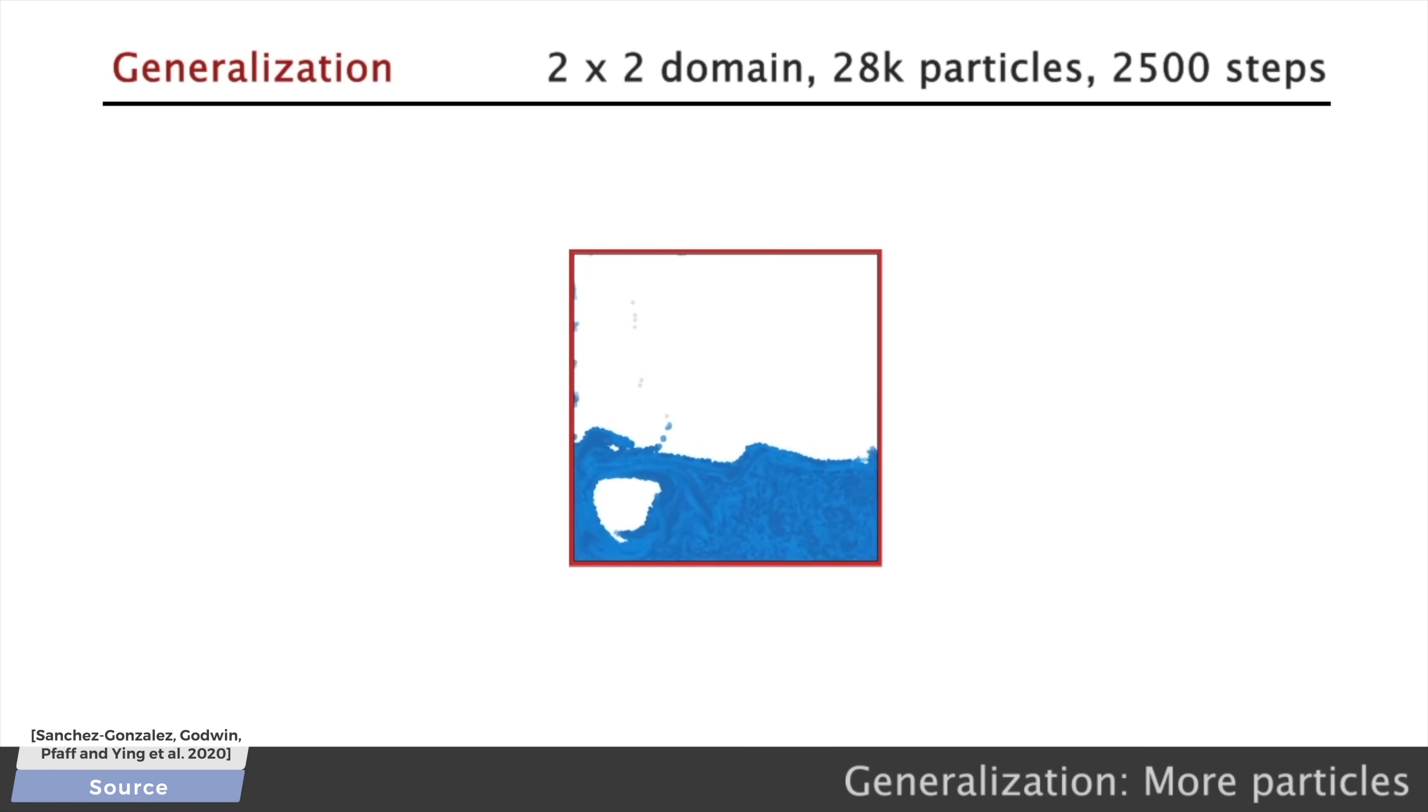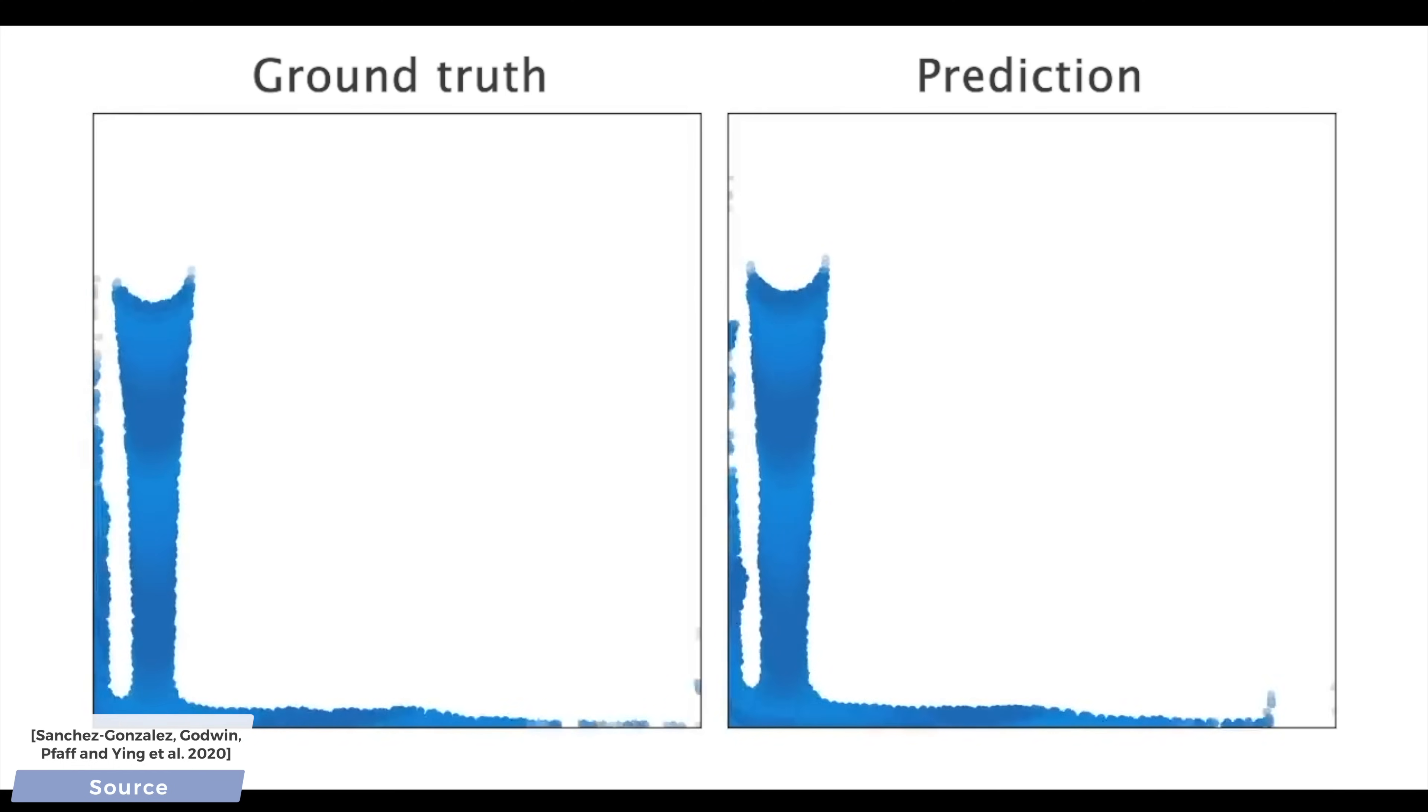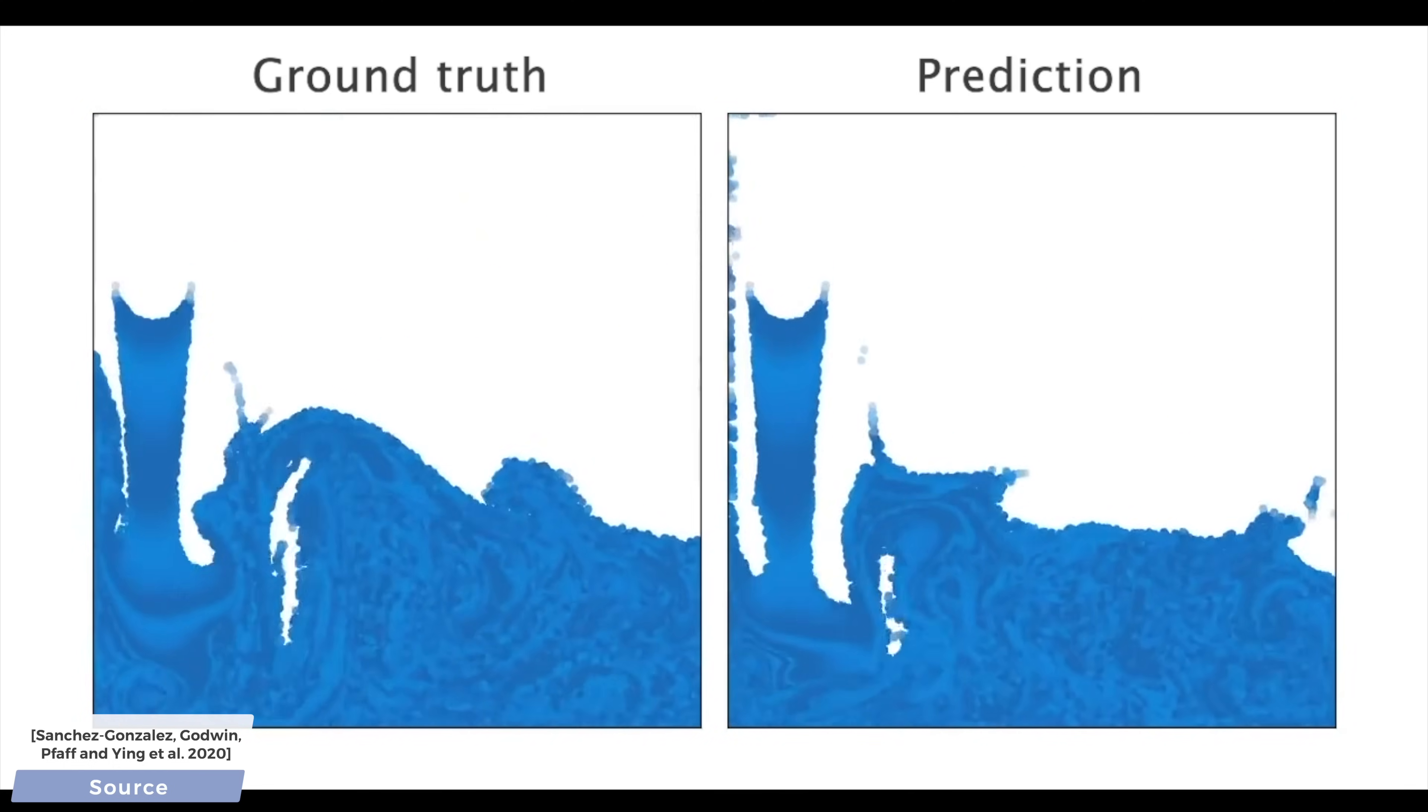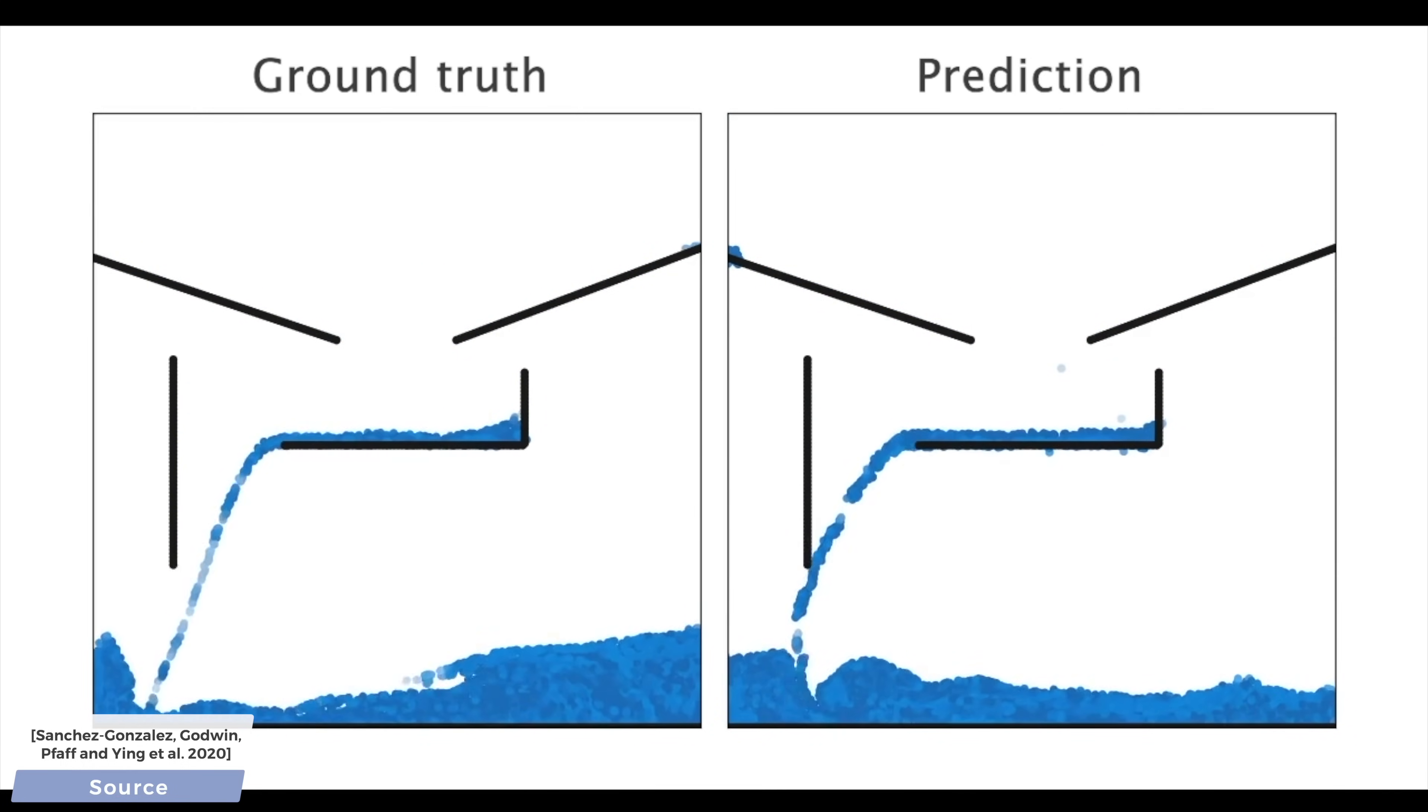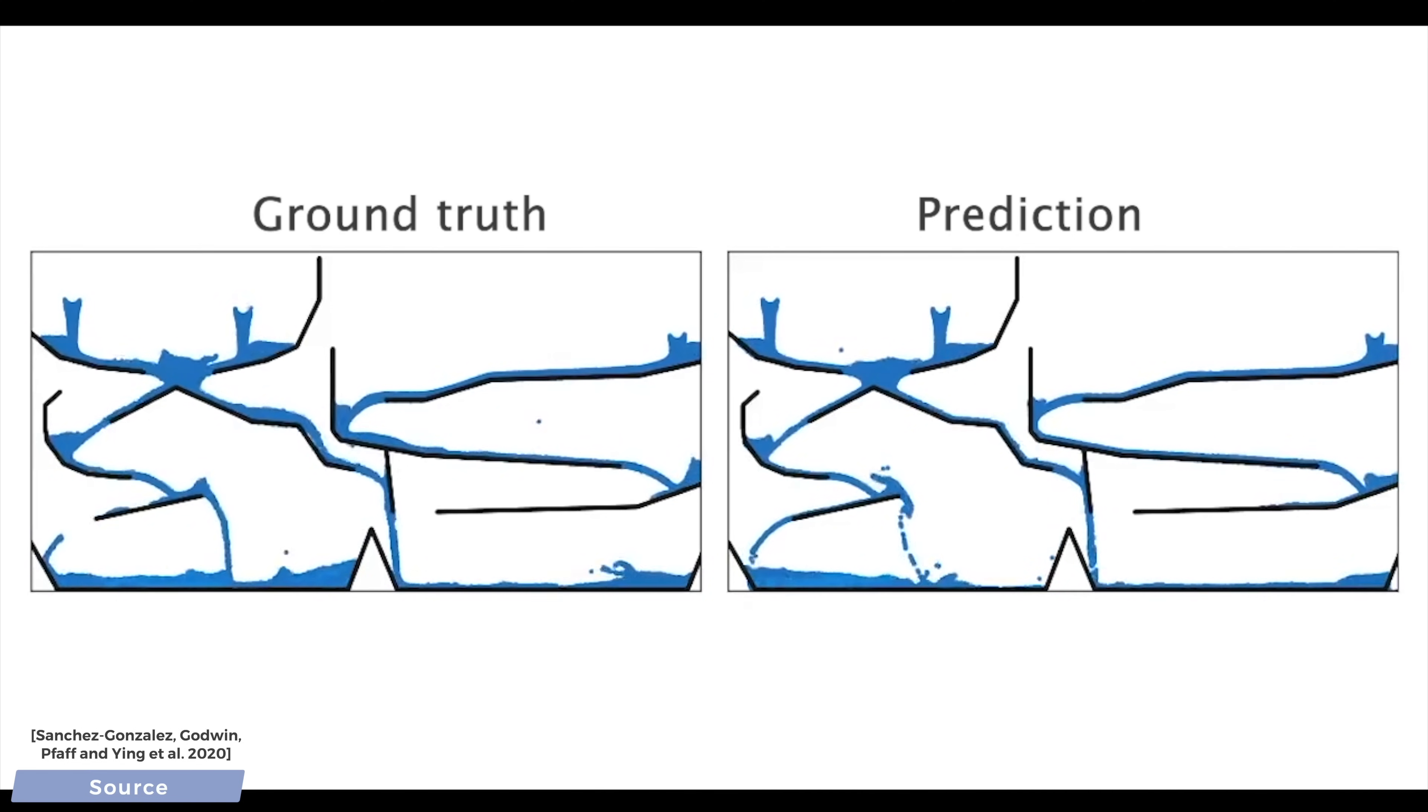But, there is even more. We can train it by showing how water behaves on these water ramps, and then, let's remove the ramps and see if it understands what it has to do with all these particles. Yes, it does. Now, let's give it something more difficult. I want more ramps. Yes. And now, even more ramps. Yes, I love it.